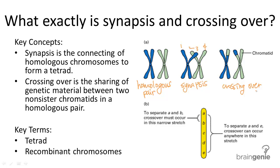Interestingly, not all genes are equally likely to cross over to another chromosome. Depending on the distance between two genes on a chromosome, there will be a different probability of these genes separating. This makes more sense when you look at a simple diagram like this one.